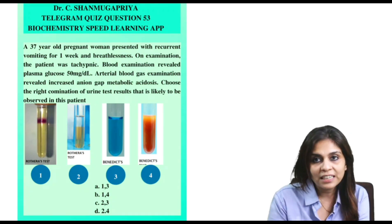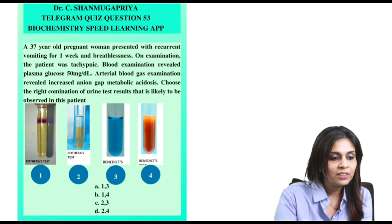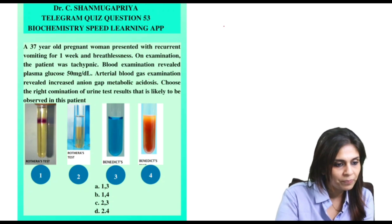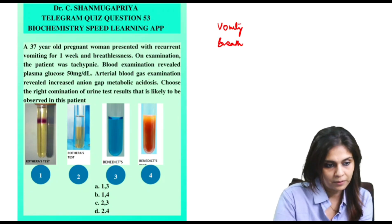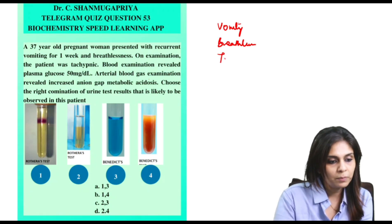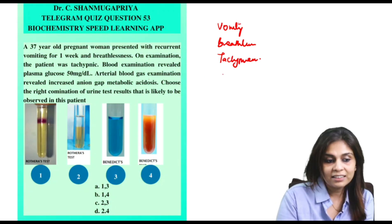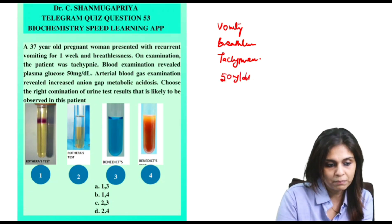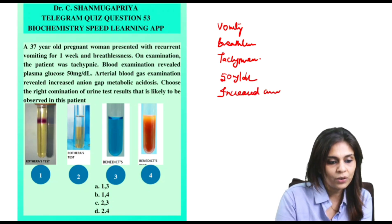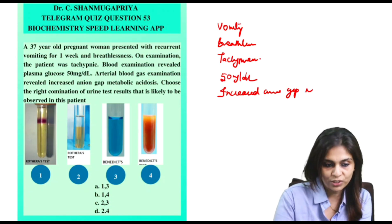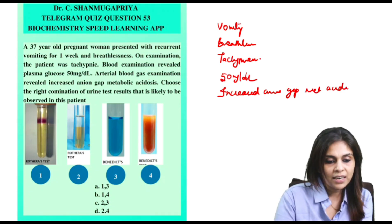Let's first summarize the positive findings in this history. The first positive finding is vomiting, the second one is breathlessness, and accordingly there is tachypnea. There is hypoglycemia because plasma glucose happens to be just 50 mg/dL. Additionally, arterial blood gas has also shown an increased anion gap metabolic acidosis.